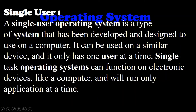Operating systems have two main categories: single user and multi user. A single user operating system is a type of system that has been developed and designed to be used on a computer by one user at a time.